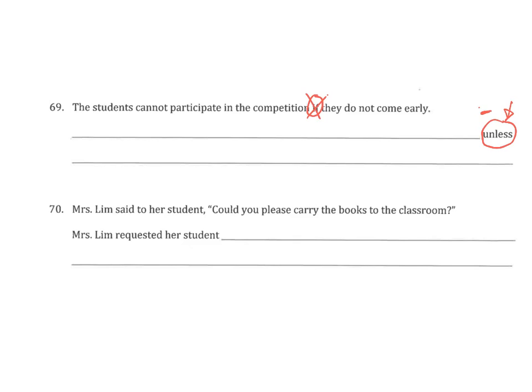And 'unless' has a negative meaning. 'Unless' means 'if you don't'. So that means I cancel out the 'not'. 'Do not' is cancelled out as well because of 'unless' being negative. So now let's order the answer: the students cannot participate in the competition unless they come early. So if they don't come early, they cannot participate.